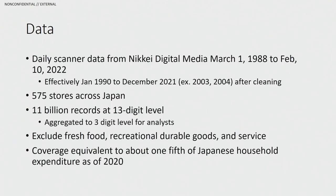The data in this paper is from a database of prices collected at a daily frequency, making it interesting compared to earlier work. Nakamura and Steinsson used monthly data from the U.S. CPI research database. There's another paper by Eichenbaum, Jaimovich, and Rebelo that used weekly scanner data. This paper goes to the daily frequency, which is a pretty interesting advance. The raw data has 11 billion individual records at the 13-digit level, aggregated to the three-digit level for analysis. The data excludes fresh food, recreational durable goods, and services categories, but covers about one-fifth of expenditures in Japanese CPI as of 2020.